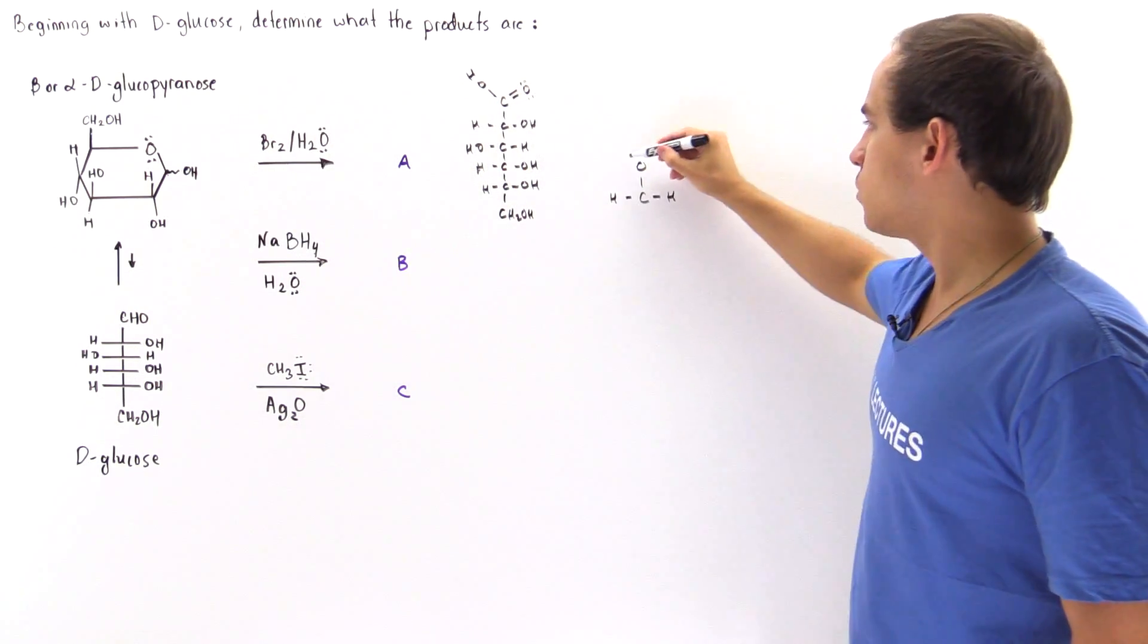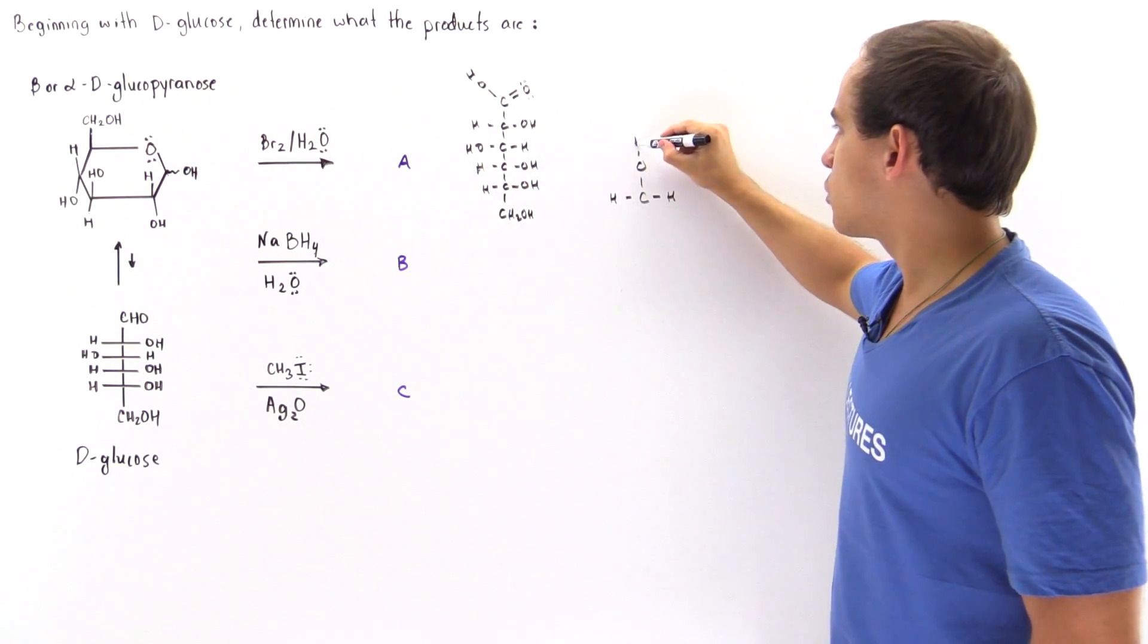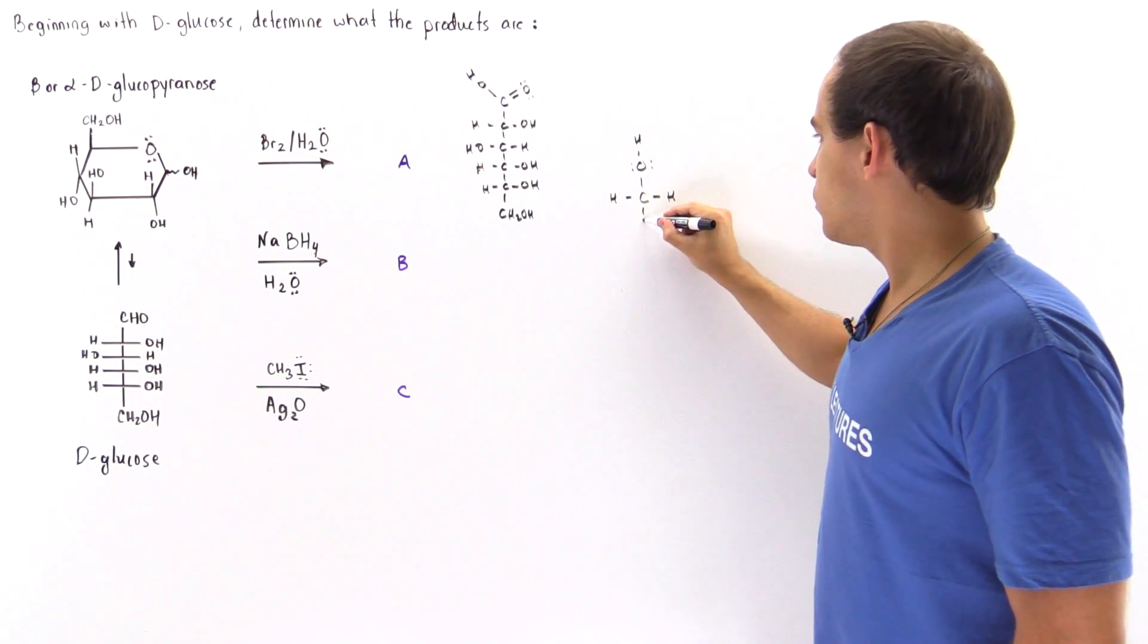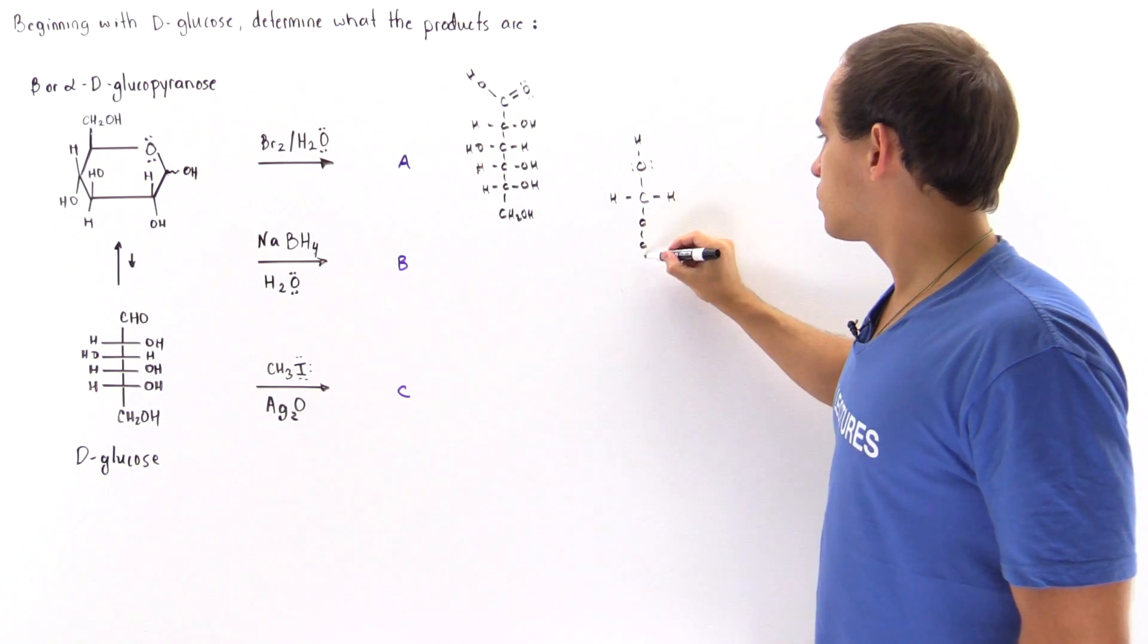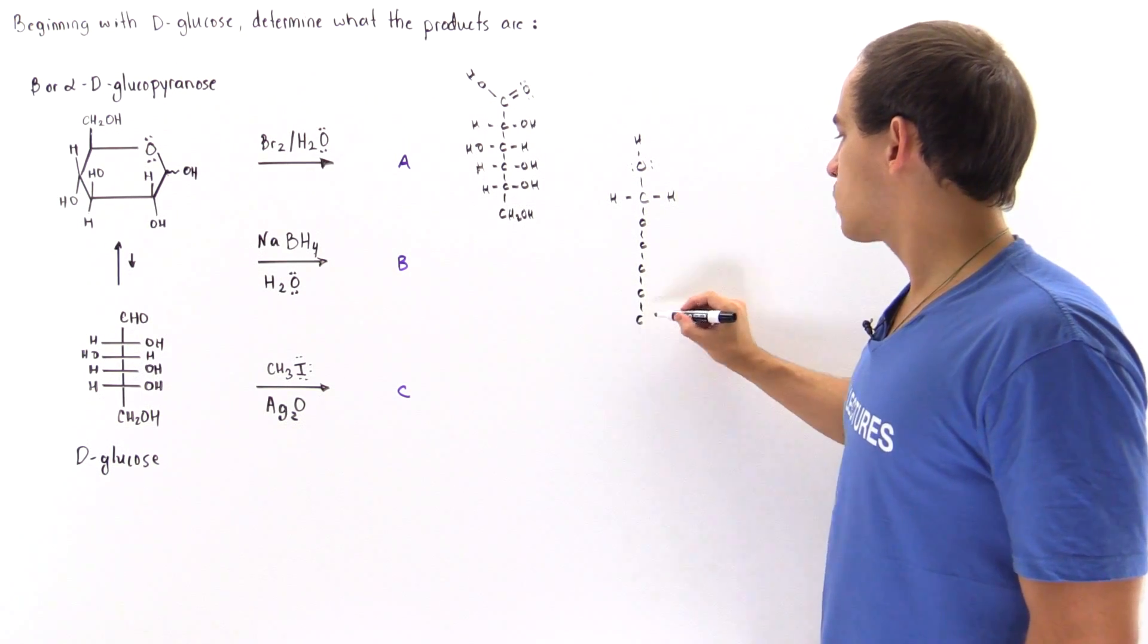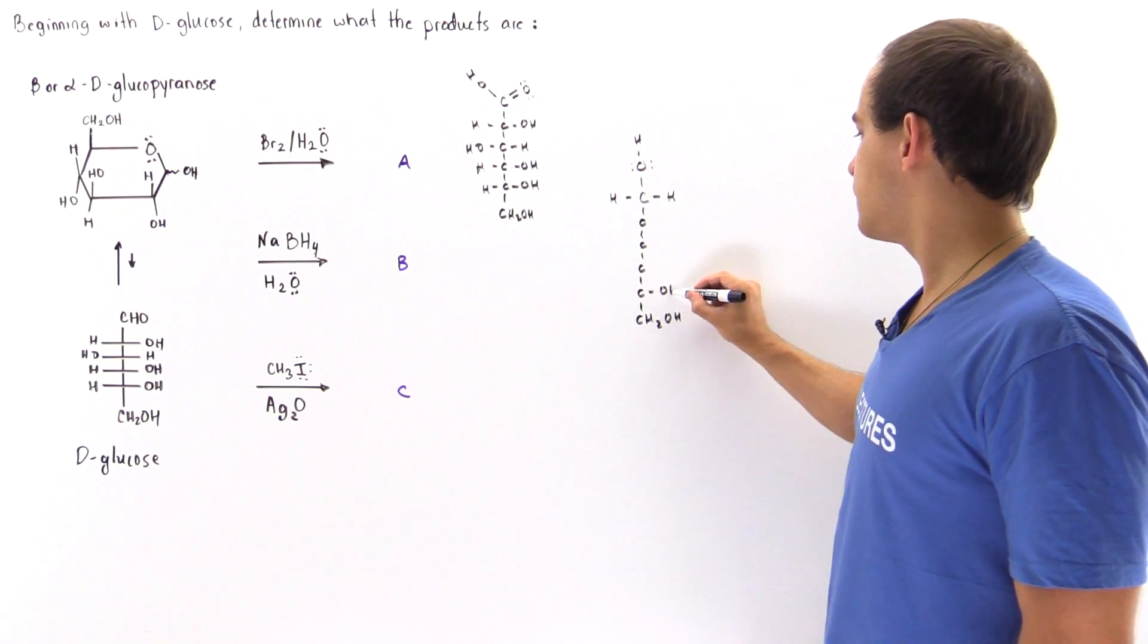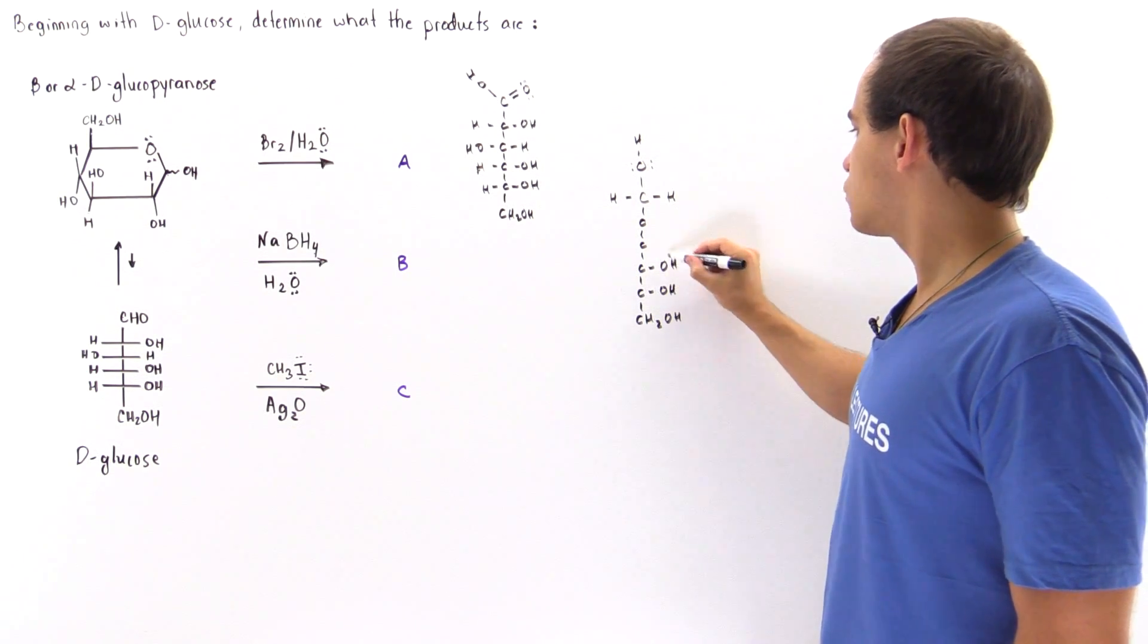Now we have the second carbon, the third carbon, the fourth carbon, the fifth carbon, the sixth carbon, and these basically remain exactly the same as before—they don't actually change.